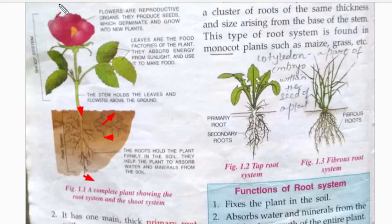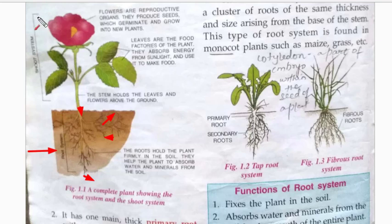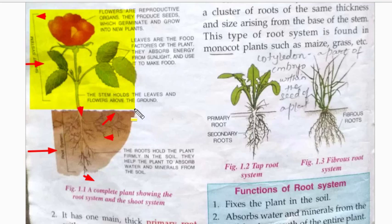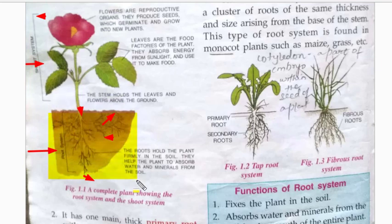Looking at the structure of a plant, you can see the root system is the underground portion — from the base down to the root hairs. From the base of the stem upwards, including the flower, is the shoot system. The highlighted underground portion is the root portion of the plant, and the above-ground portion is the shoot portion.